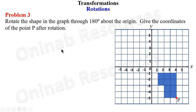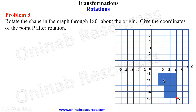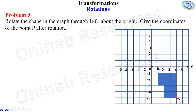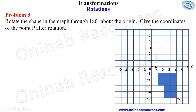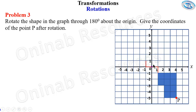For problem three: rotate the shape in the graph through 180 degrees about the origin. Give the coordinates of point P after rotation. This is point P on the object. Since it is at the origin, we create 180 degrees which is a straight line. For your information, rotation through 180 degrees can be either anti-clockwise or clockwise — you still have the same result.